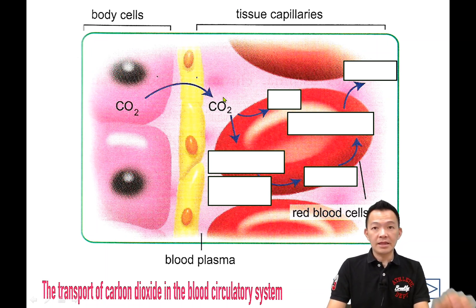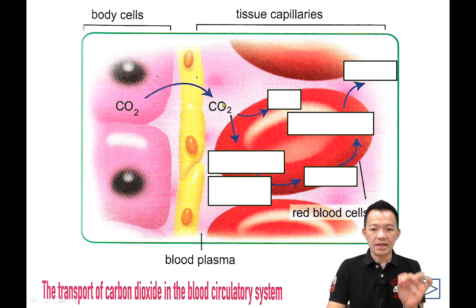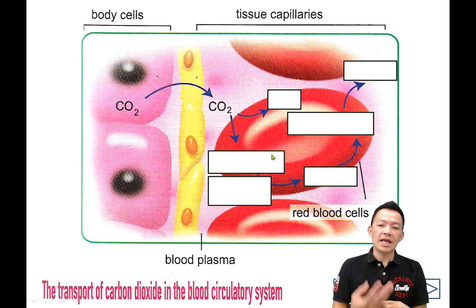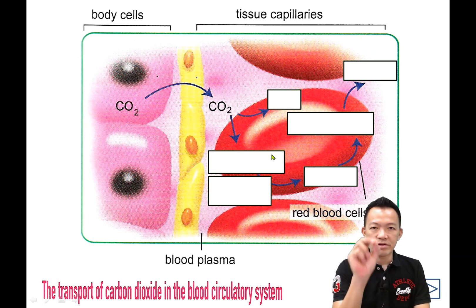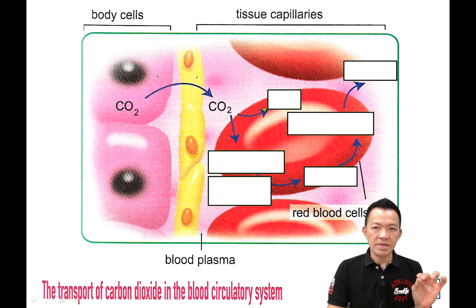So when the carbon dioxide keeps entering the blood capillary, it will diffuse into the red blood cell, or erythrocyte. When entering the erythrocyte, 23% of carbon dioxide is going to bind together with the hemoglobin and become carbaminohemoglobin.